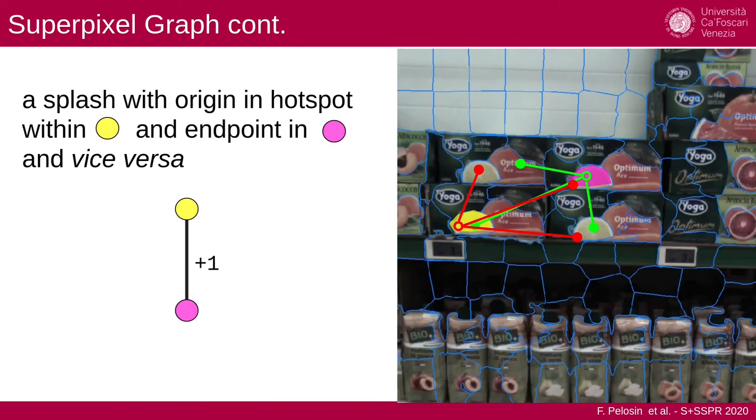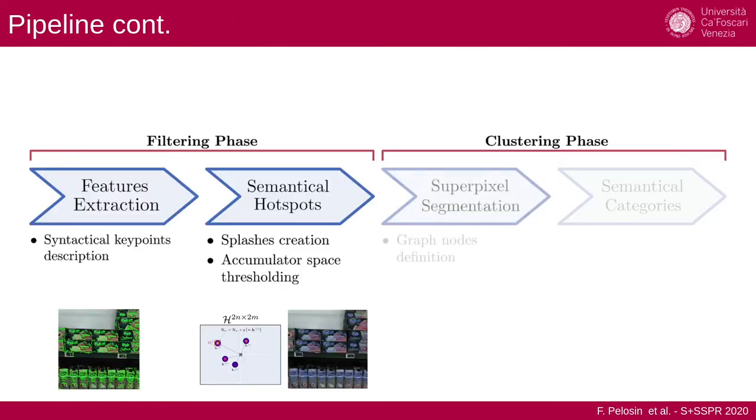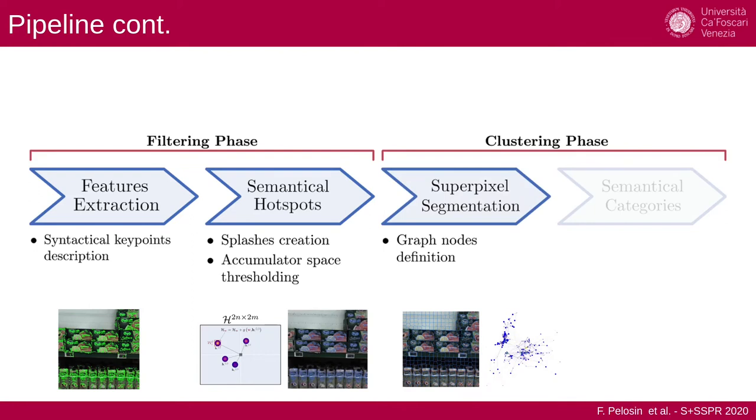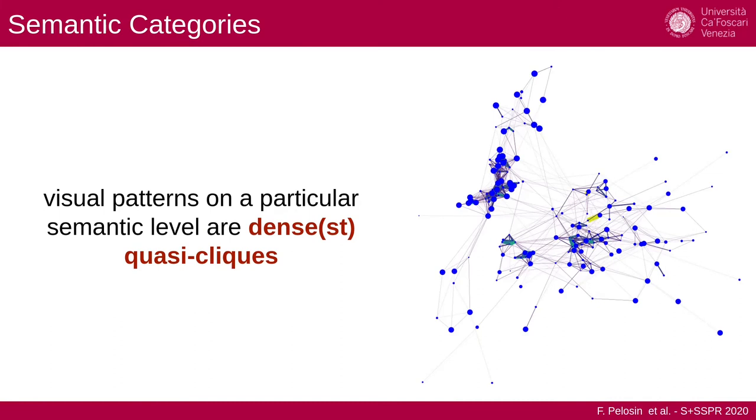Each node is a superpixel and the edge weight is calculated through splashes. If we have a mutual agreement between splashes falling into superpixels, we put a vote of one. So we connect all the superpixels through the splashes. Now we want to extract the semantic categories, and all the visual patterns are encoded as the densest quasi-cliques inside this graph.